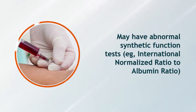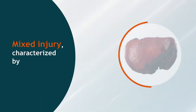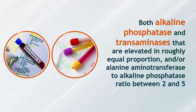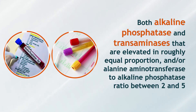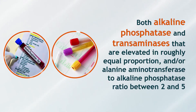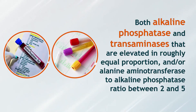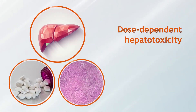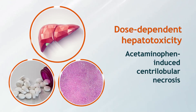Examples include international normalized ratio and albumin ratio. Mixed injury is characterized by both alkaline phosphatase and transaminases that are elevated in roughly equal proportion, and/or alanine aminotransferase to alkaline phosphatase ratio between 2 and 5. Mechanism-based classification includes dose-dependent hepatotoxicity, such as acetaminophen-induced centrilobular necrosis.